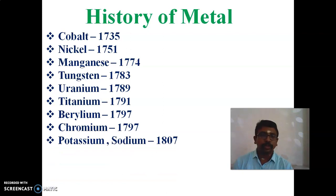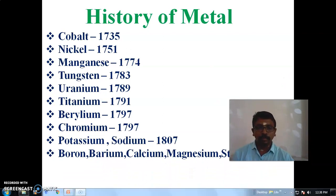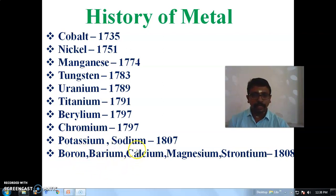Potassium, sodium, boron, barium, calcium, magnesium, and strontium — these metals were introduced in the year 1808. The symbol for sodium is Na, boron is B, barium is Ba, calcium is Ca, magnesium is Mg, and strontium is Sr.